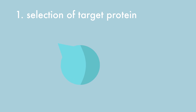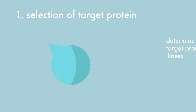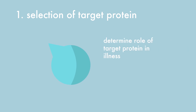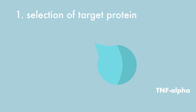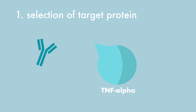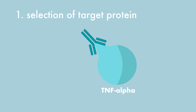First, the role of the target protein in an illness has to be determined. We know that TNF-alpha is greatly involved in diseases such as Crohn's disease and rheumatoid arthritis. Therefore, TNF-alpha makes a great target for an antibody.